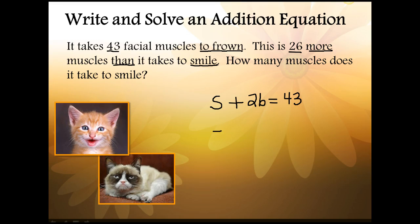We want to isolate the s so we will subtract 26 from both sides of the equation. On the left the plus 26 and subtract 26 cancel each other out leaving us with just s. On the right we end up with 17. It takes only 17 muscles to smile. Of course you can check your answer by plugging it in. We would add 17 plus 26 and confirm that it does in fact equal 43 so we know this is correct.